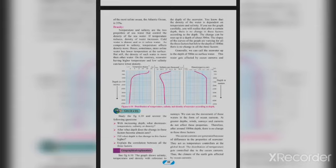The density of seawater is dependent on temperature and salinity. If you see the graph carefully, you will realize that after a certain depth there is no change in these factors. These changes can be seen up to a depth of about 500 meters; the slopes of the curves vary for all three factors, but below 1000 meters there is no change. We can call the seawater up to 500 meters the sea surface water — it gets affected by ocean currents and sun rays. At greater depths, winds, sun rays, and currents do not affect these properties, so after around 1000 meters there is no change in these three factors.